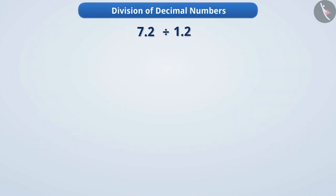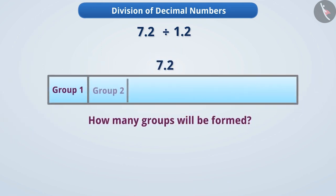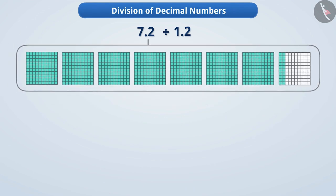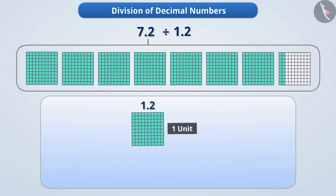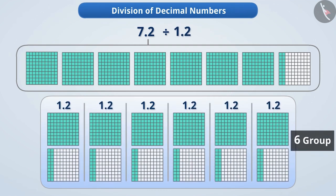7.2 divided by 1.2. This division means how many groups of 1.2 can be formed out of 7.2. So, let us denote the number to be divided first. We will do it in this manner. Let us make a group out of 1.2, that is 1 unit and 2 tenths. Similarly, we can make 6 groups of 1.2 from 7.2. Therefore, we can say that 7.2 divided by 1.2 is 6.